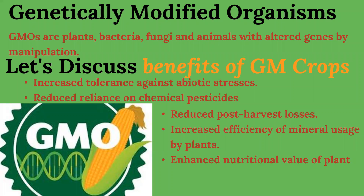There are three critical research areas of biotechnology. The first is providing the best catalyst in the form of a microbe or enzyme. The second area is creating optimal conditions through engineering. And the third is downstream processing technologies to purify protein.